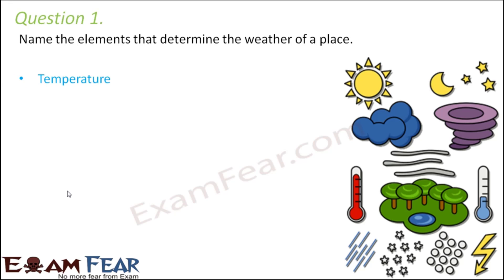The important elements are: temperature — if the temperature is very high it is hot, if very low then weather is cold; rainfall — too much rain makes it rainy; humidity — the amount of moisture present in the environment, which is normally high before and after rainfall; and wind speed — sometimes extreme high wind speed also makes for unpleasant weather.